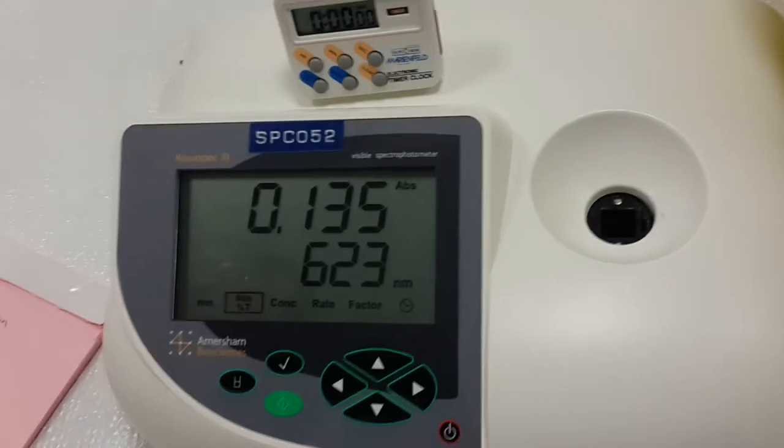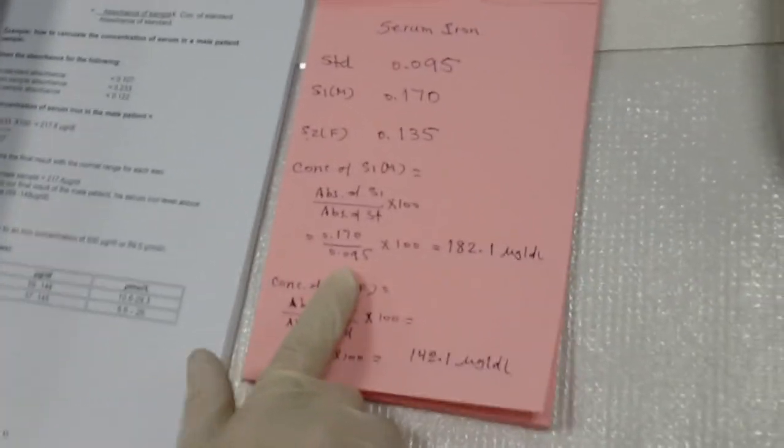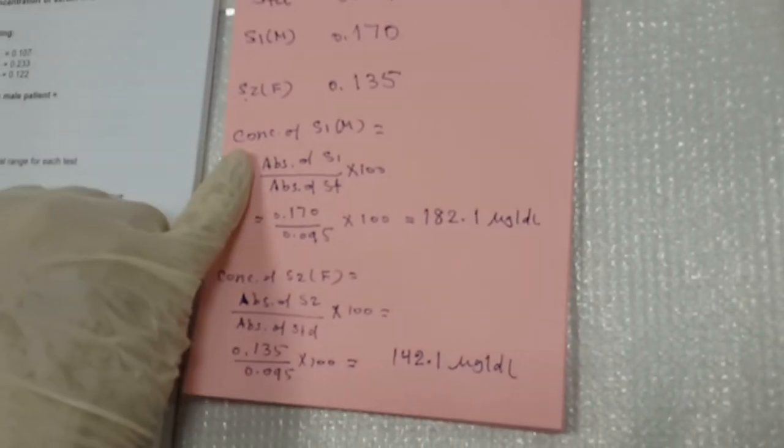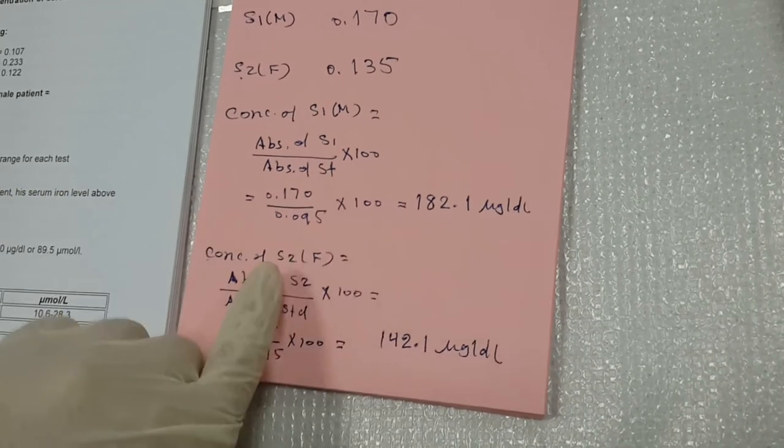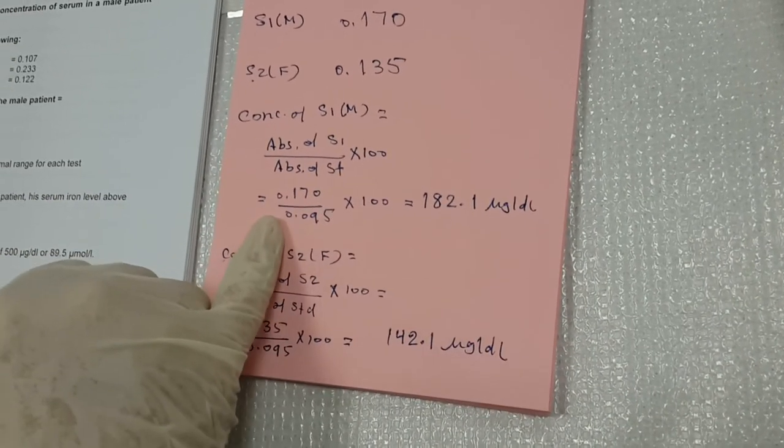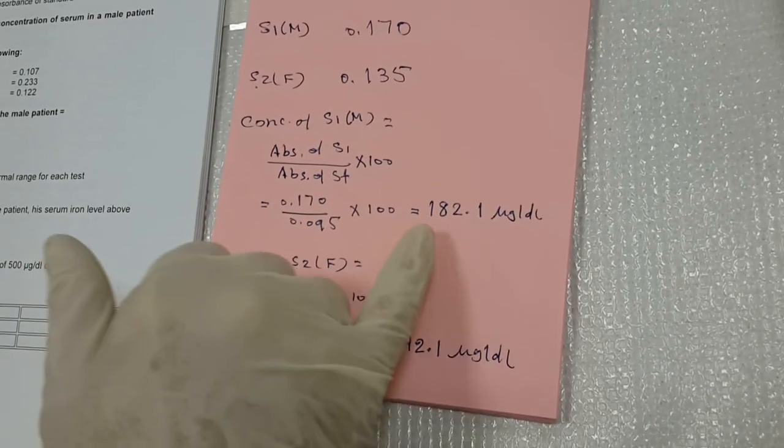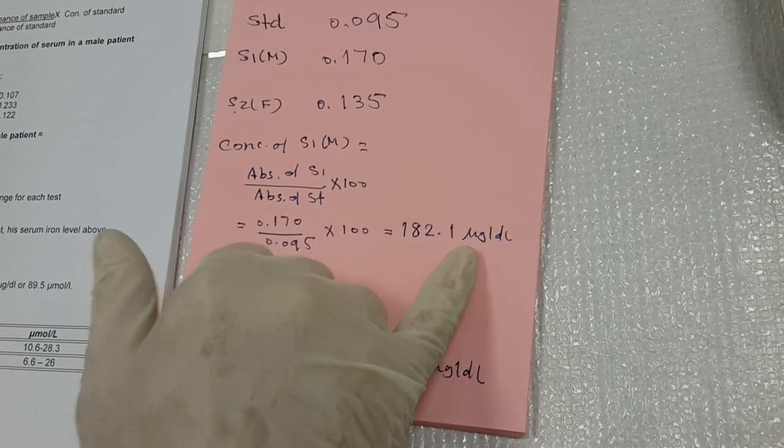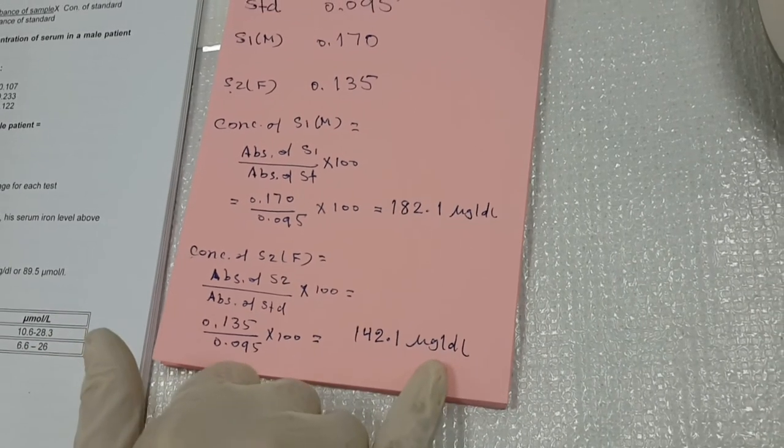Now we'll go now to the calculations. As usual, okay, now we did our calculations. As you know, the same equation that we are using each time: absorbance of the sample over the absorbance of the standard multiplied by the concentration of the standard. For the first one, male sample, we put the data 0.17 over 0.095 multiplied by 182.1 microgram per deciliter. For the female sample, the same thing, it was 142.1 microgram per deciliter.